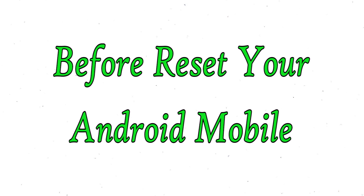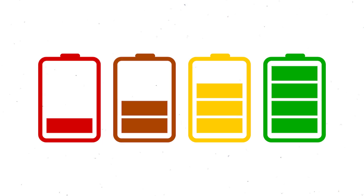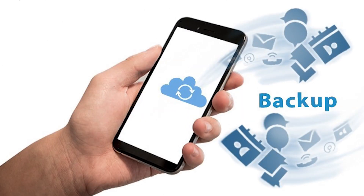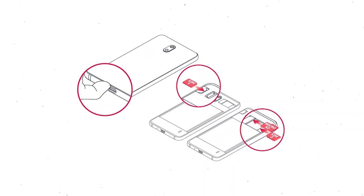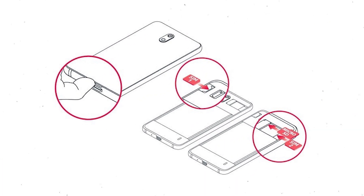Before resetting your mobile, make sure the battery is properly charged. If less than 50%, charge your mobile. You need to make sure that the data on your device is backed up so you do not lose valuable photos or documents. Reset deletes all your mobile data, so back up all important data and remove SIMs and SD card.